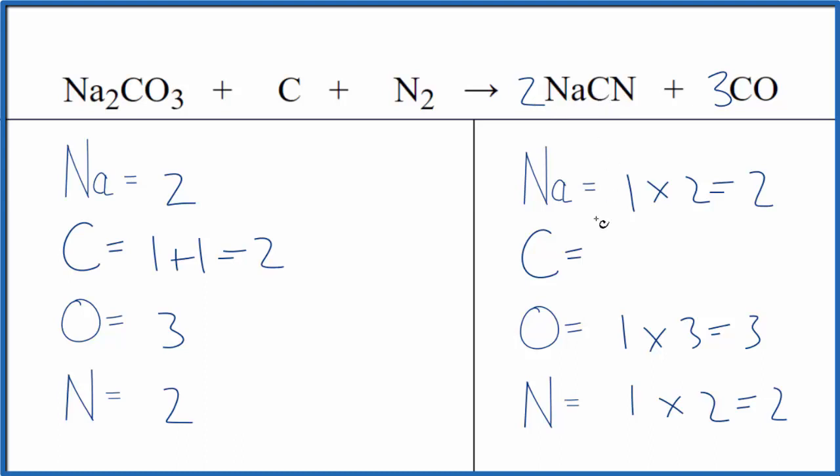So we have two times the one. That's two plus three times the one here. That's three. We have five carbon atoms.